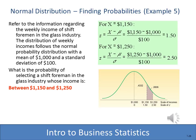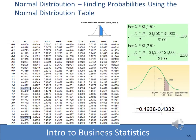Here's a harder example using the same individuals: what is the probability of the area between 1,150 and 1,250? We compute two Z scores — one for 1,150 and one for 1,250 — look up both probabilities, and subtract one from the other. The probability for Z = 2.5 is 0.4938, and for Z = 1.5 it is 0.4332. Subtracting gives a final probability of 0.0606.